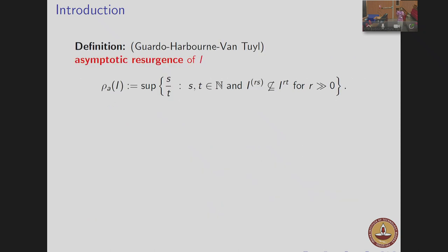The idea is to compute resurgence, but it's a very difficult problem. In studying resurgence, Guado, Harbourn, and Van Tuyl introduced another invariant called the asymptotic resurgence of I. It is defined as the supremum of s/t where I^{(sR)} is not contained in I^{tR} for all large values of R. One can see that the asymptotic resurgence is bounded above by the resurgence.